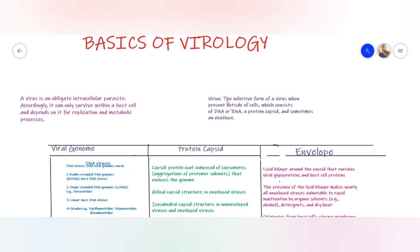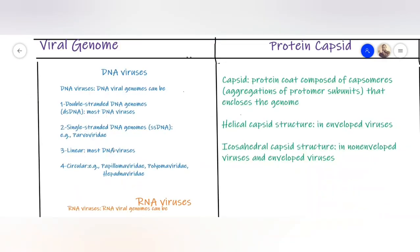We also need to define this term called a virion. This is the infective form of a virus when present outside the cells. It consists of three things: either DNA or RNA, a protein capsid, and sometimes an envelope. In this video, we're going to look at these three things.